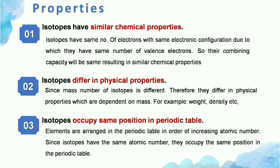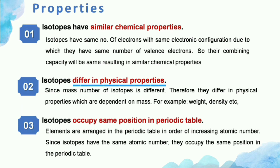The chemical properties of all isotopes of an element are the same, because isotopes have the same atomic number and thus the same electronic configuration and the same number of valence electrons. Due to the same number of valence electrons, their combining capacity is also the same, so different isotopes can lose, gain, or share the same number of electrons to form similar compounds. However, isotopes have different physical properties dependent on mass — such as weight and density — because their mass numbers differ.